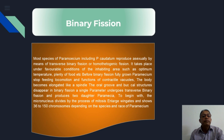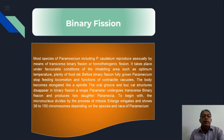Most species of Paramecium caudatum reproduce asexually by means of transverse binary fission. It is homokaryotic fission that takes place under favorable conditions — ample water, good conditions, ample food material, and optimum temperature. Before binary fission, the fully grown Paramecium stops feeding, locomotion, and other functions. The body becomes elongated like a spindle shape, and the oral groove and buccal structures disappear.